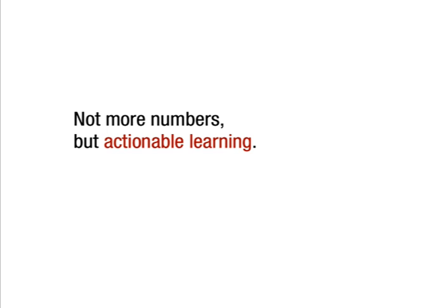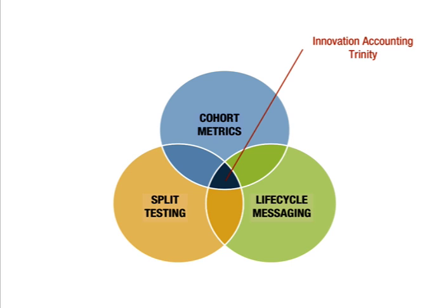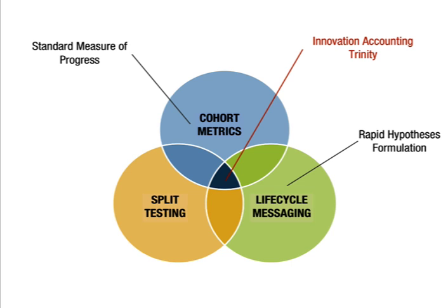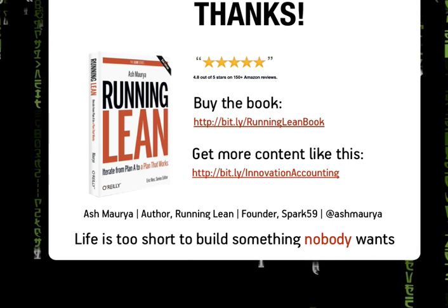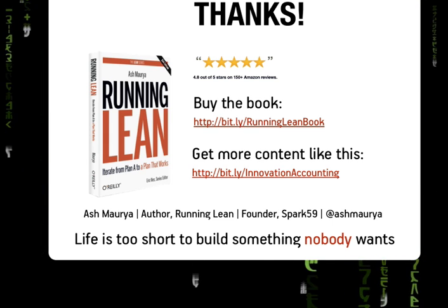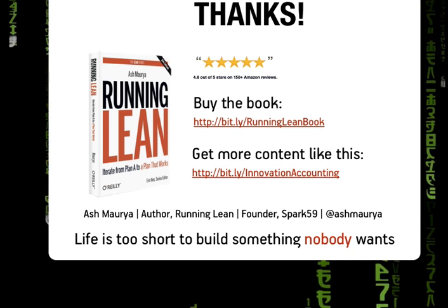In summary, the key takeaway I want to drive home is that metrics by themselves are not enough. We find our learning is most effective when we combine a number of tactics together into something we call the innovation accounting trinity. It starts with baselining our product using cohorts as the standard measure of progress. We then build a continuous feedback loop with customers using automated lifecycle messages. These conversations help us understand who our customers are and why they behave the way they do — in essence, they help us formulate rapid hypotheses, which we then rigorously test using split test experiments. So that was a quick overview of how we put innovation accounting to practice at Spark 59. Next time I'll cover how to build a company-wide dashboard your whole company will not only understand, but will want to use. Until then, take care. Thanks.